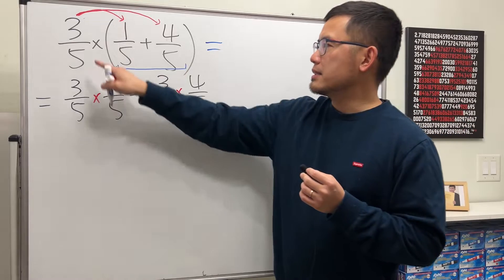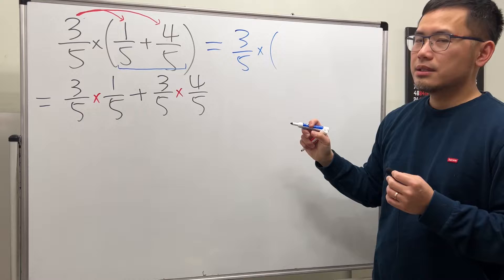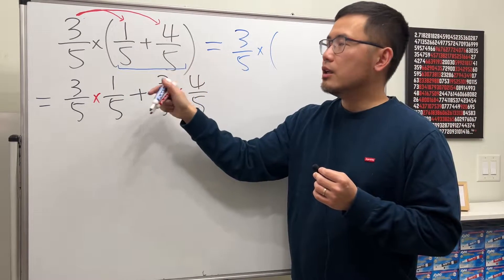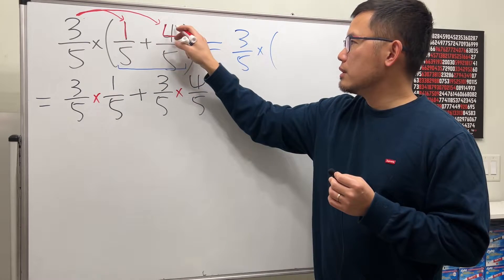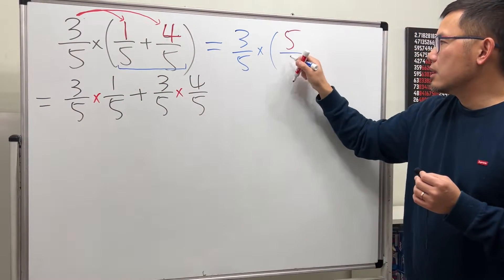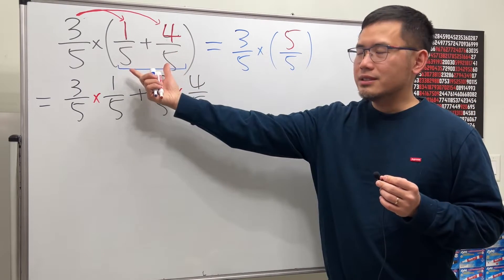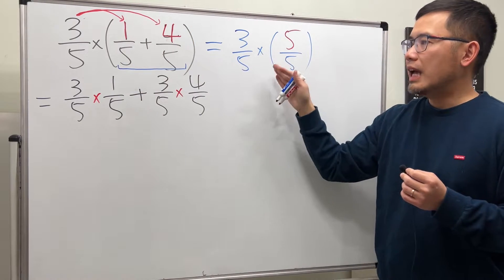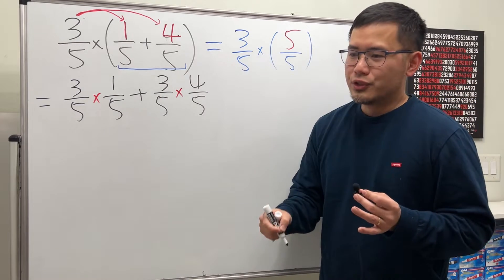So this right here is the same as, let's keep this, 3 over 5 times the parentheses. Let's add this up. Now, they have the same denominator already, so we just have to add the numerators. This is 1 plus 4, which is just 5. And then we keep the same denominator like this. So, the order of operations, right? We do the inside of the parentheses, and this right here is doable, you do that. After that, of course, you can finish it here. Now, here is what the confusion is.